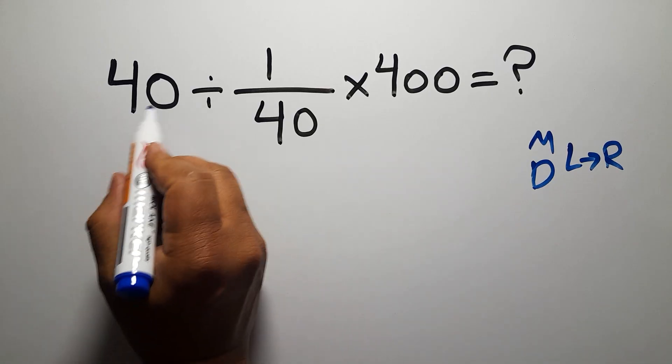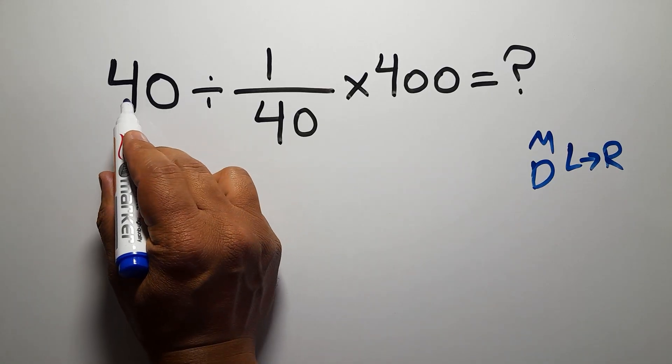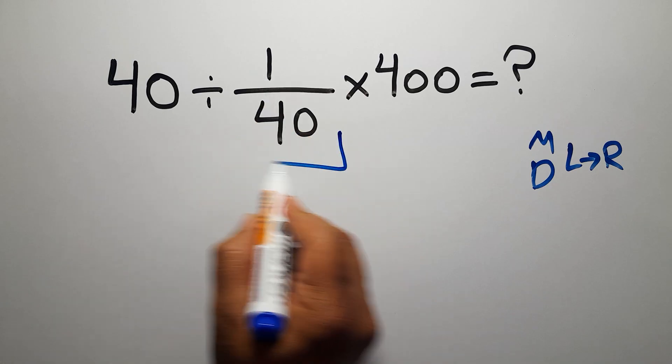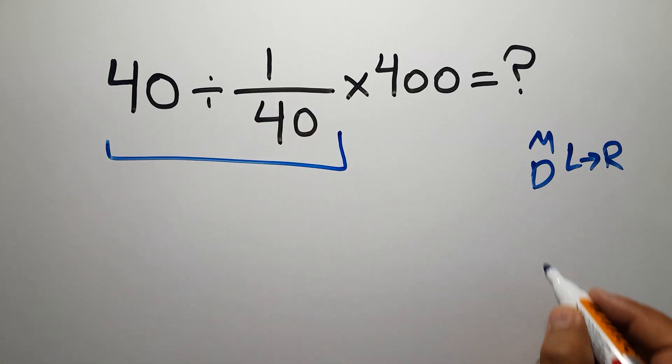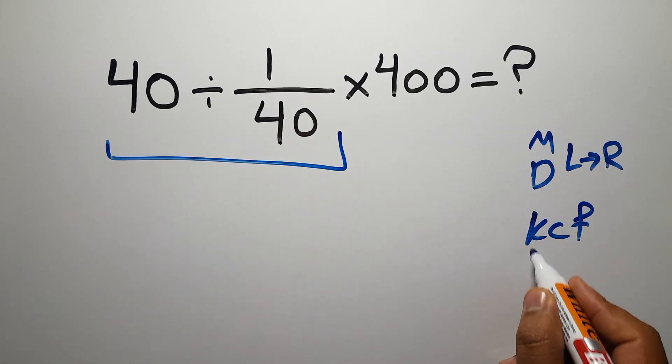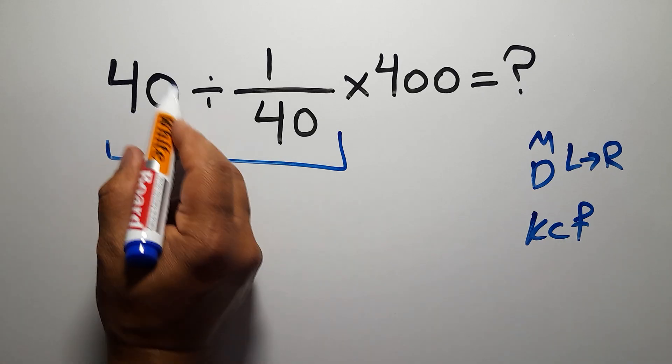So first we must do this division: 40 divided by 1 over 40. According to the KCF rule, K stands for keep, C stands for change, and F stands for flip. We can write: keep the first fraction...